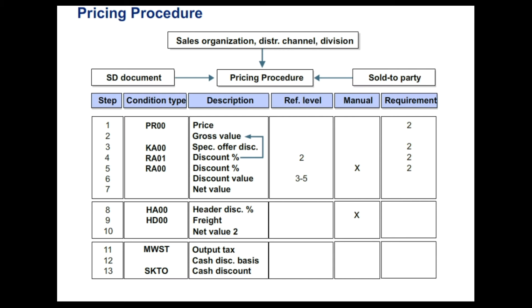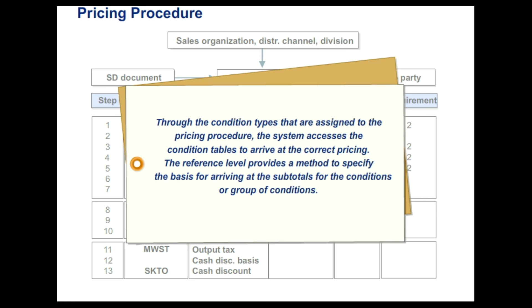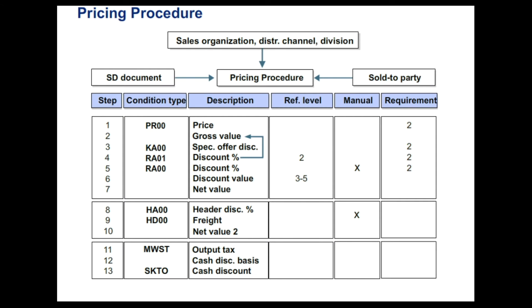Pricing procedure: all condition types permitted in the pricing are available in the pricing procedure. You can specify requirements for these condition types to arrive at your pricing. Through the condition types that are assigned to the pricing procedure, the system accesses the condition tables to arrive at the correct pricing. The reference level provides a method to specify the basis for arriving at the subtotals for the conditions or group of conditions. You can define each condition type based on your requirement as mandatory, manual, or statistical.